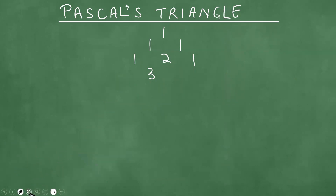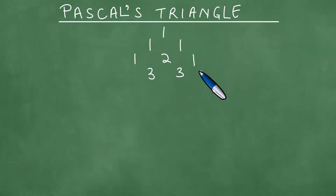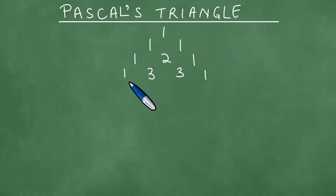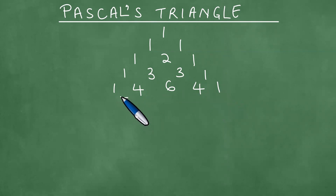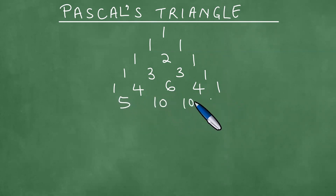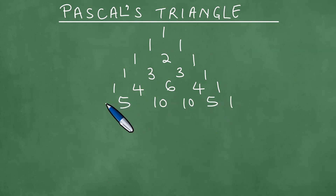So what we have is 2 plus 1 is 3, and you put 1s on the sides. Then 3 plus 1 is 4, 3 plus 3 is 6, 3 plus 1 is 4 — put 1 on the sides. So 1 plus 4 is 5, 4 plus 6 is 10, 6 plus 4 is 10, 4 plus 1 is 5 — put 1s on the sides.